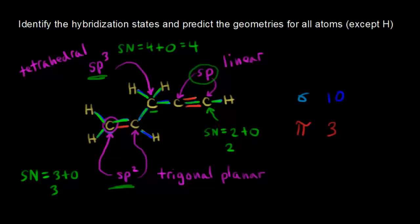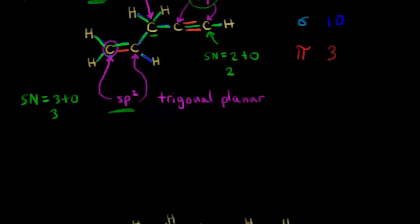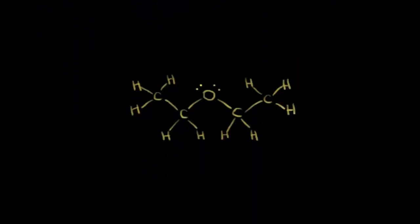Let's move on to another example and do a similar analysis. Before we do, notice that hydrogen is excluded here because hydrogen is only bonded to one other atom, so there's no real geometry to talk about.